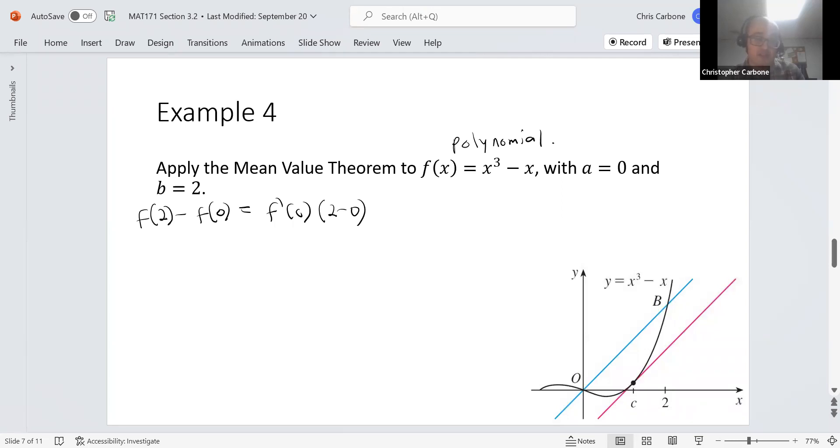When we put 2 into this function, for f(2) we get a value of 6. If we put 0 into our function, we get 0. And we know if we take the derivative of this function, we get 3x² - 1.